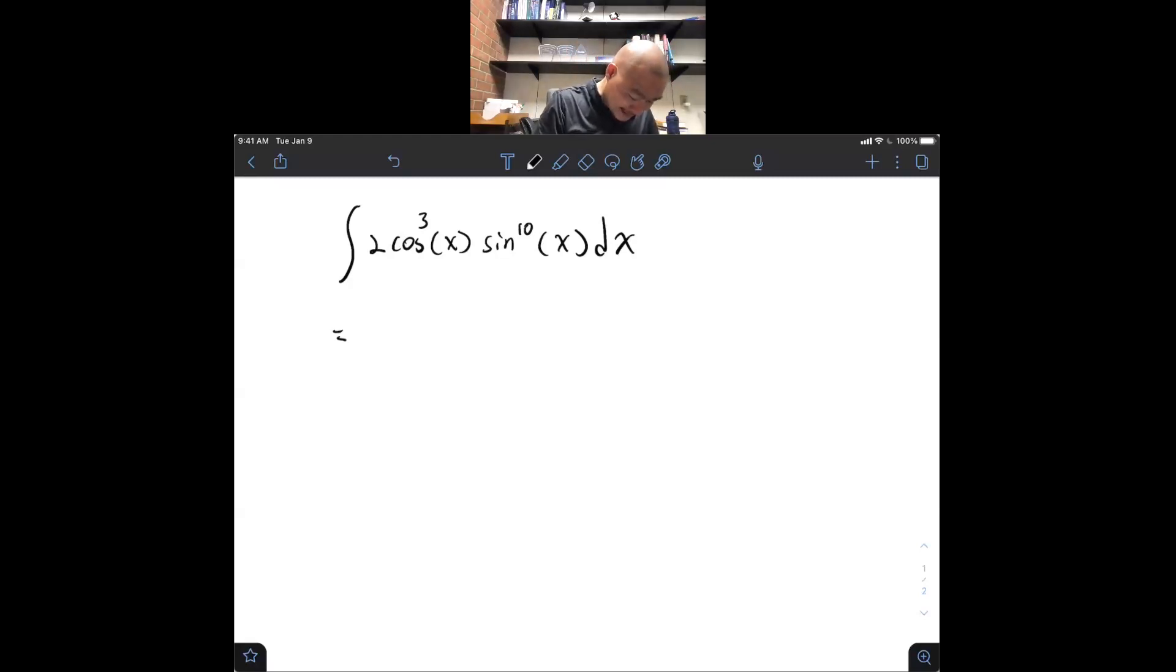So what I'd note is that I can rewrite this as, well, put a 2 out, cosine of x times, and now what we have here is cosine squared x, sine to the 10th x, dx.